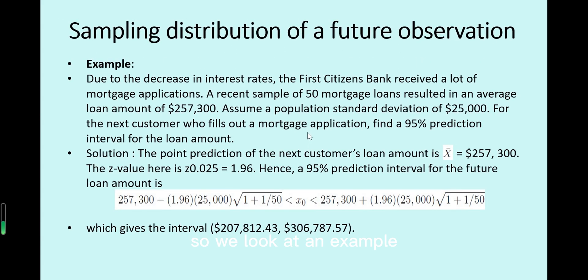So we will look at an example. Due to the decrease in interest rates, the First Citizens Bank received a lot of mortgage applications. A recent sample of 50 mortgage loans resulted in an average loan amount of $257,300. Assume a population standard deviation of $25,000.